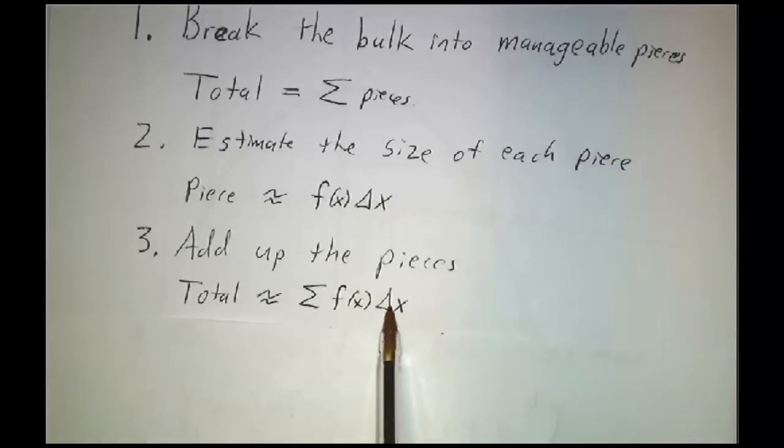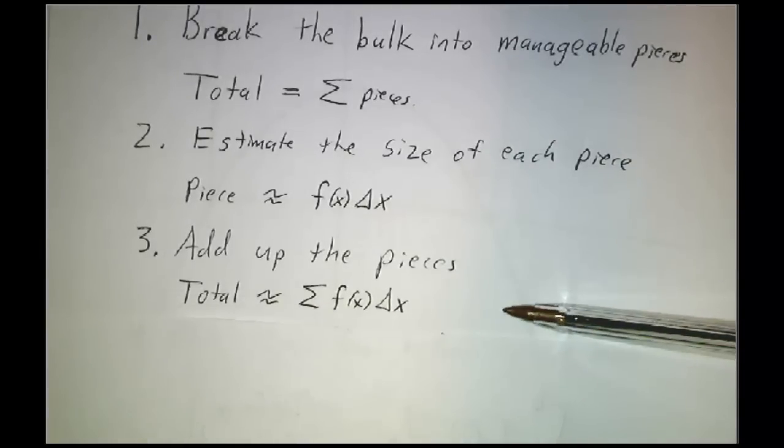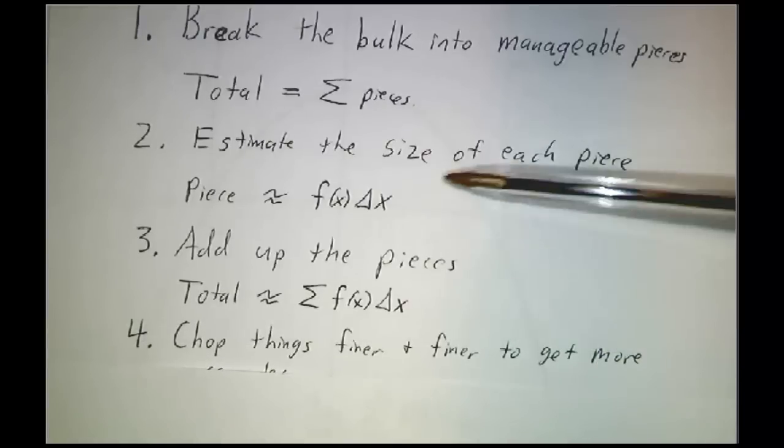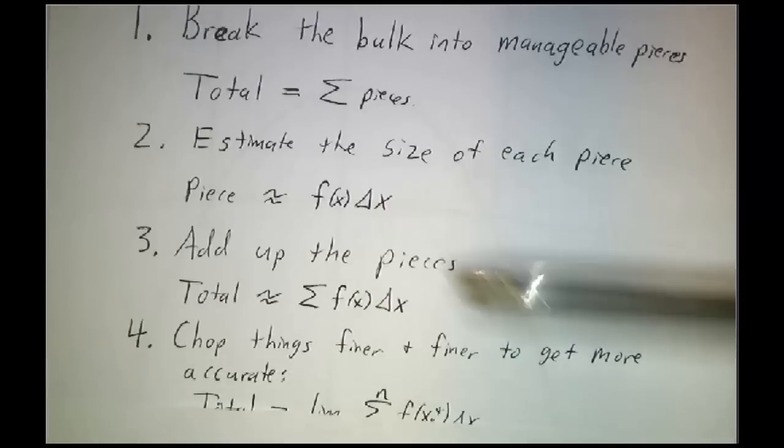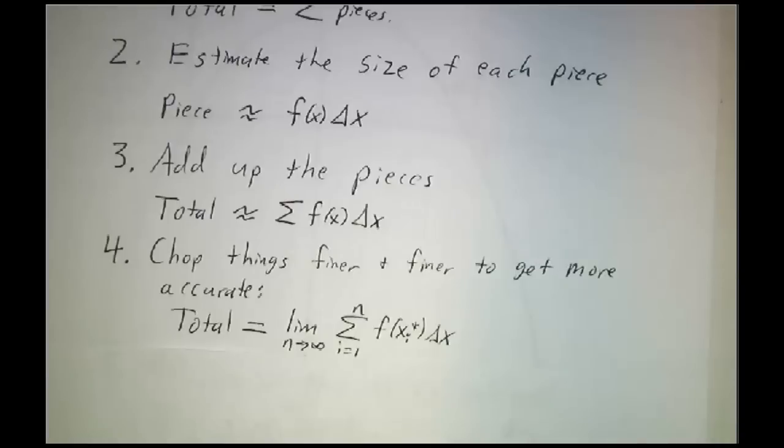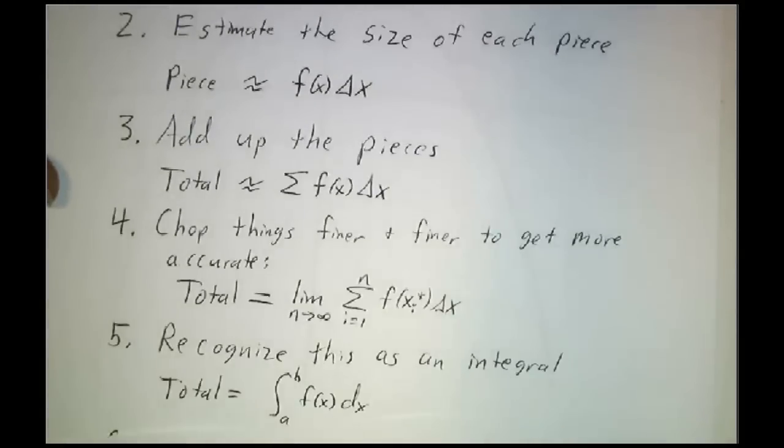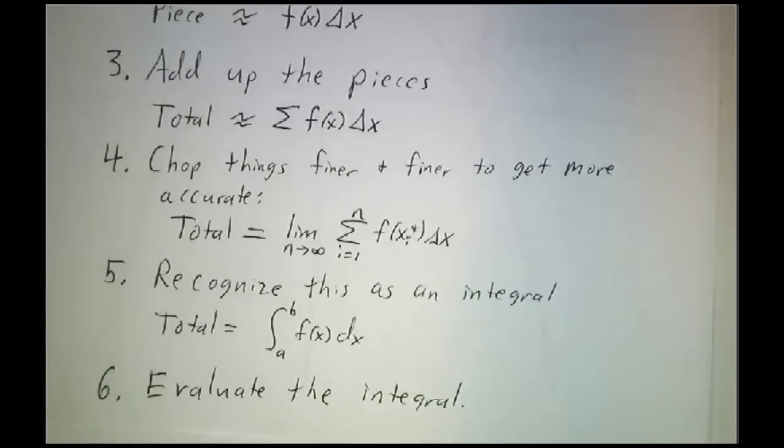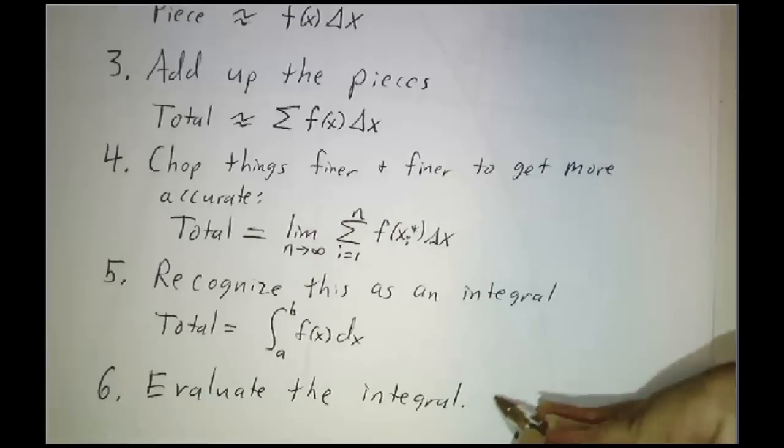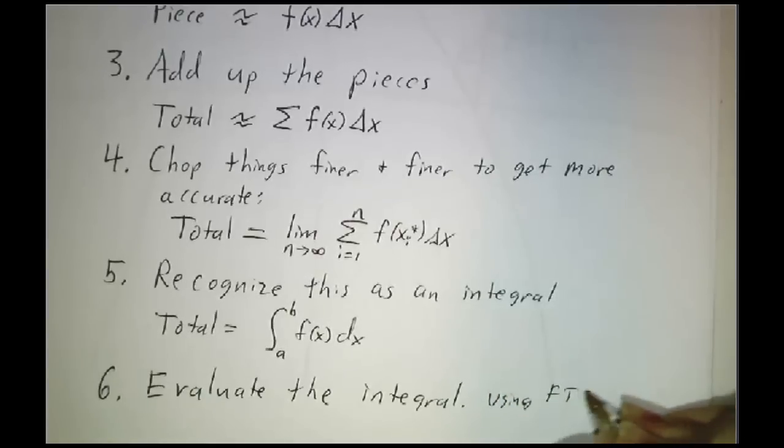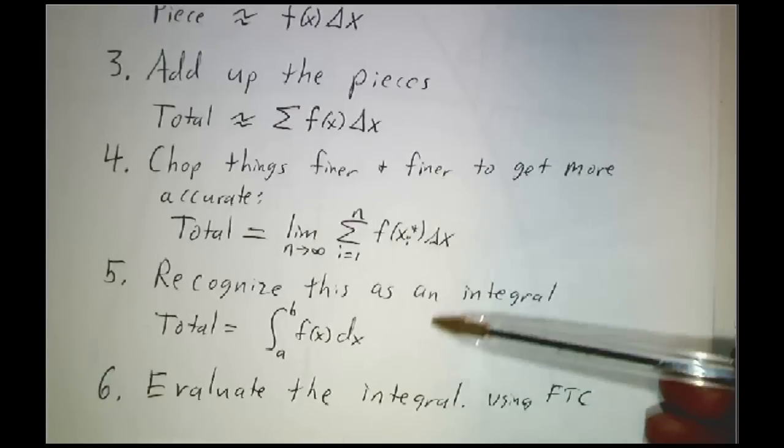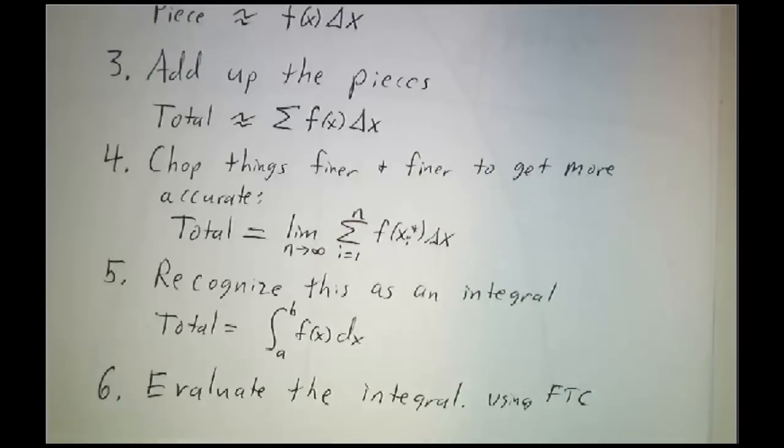And if I can, then I can put all the pieces together, and I get that the total is roughly the sum of the pieces, roughly the sum of f dx. And if that works, then I can get a better and better answer by chopping things into finer and finer pieces where this approximation gets better and better. So my exact answer is gonna be a limit of sums. But we know what a limit of sums is. A limit of sums is an integral. And so we have an integral, and then we evaluate the integral using the fundamental theorem of calculus. We use antiderivatives as a way to compute the integrals, but we use the definition as a limit of sums in order to figure out where the integrals actually apply.